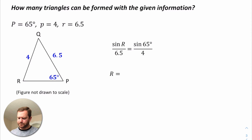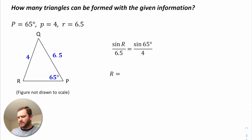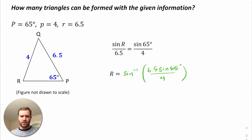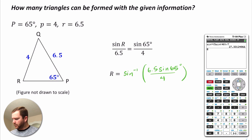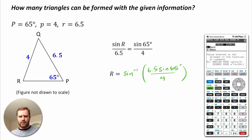Let's take a look at another example. In this example we're given triangle PQR. We're told that angle P is 65 degrees, side P is 4, and side R is 6.5. Again, we have this angle-side pair and we're going to find angle R. Just like before, we multiply by 6.5 and take the inverse sine: inverse sine of 6.5 times the sine of 65 degrees, all divided by 4. Let's throw this into the calculator.